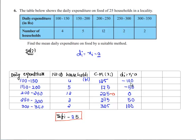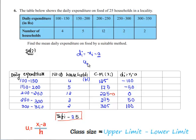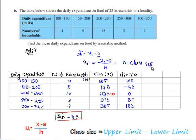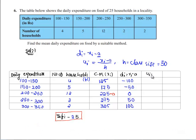Similarly, 50 and 325 minus 225 gives 100. As these values are divisible by 50, we can make them smaller by dividing by 50. We use the formula ui equal to xi minus a divided by h, where h is the class width, here taken as 50. This gives ui values of minus 2, minus 1, 0, 1, and 2.